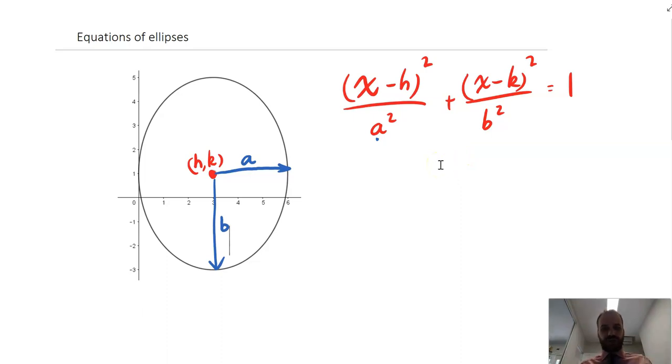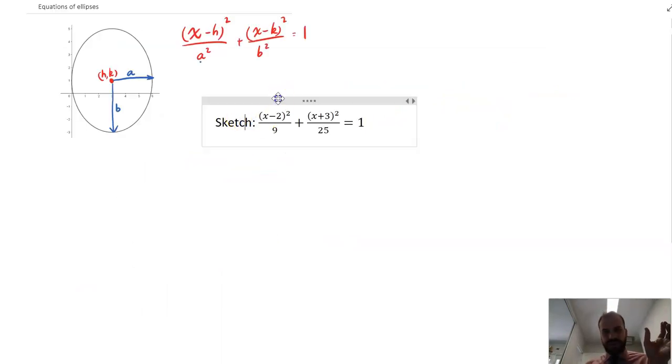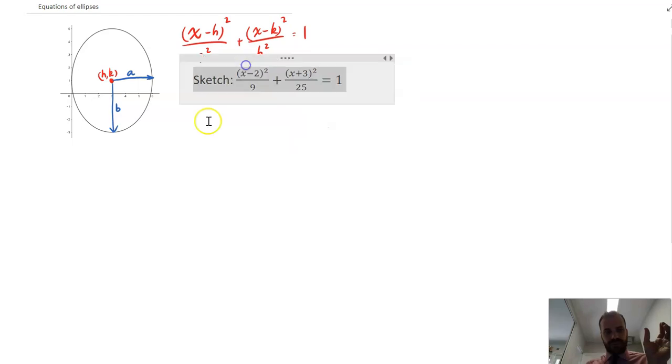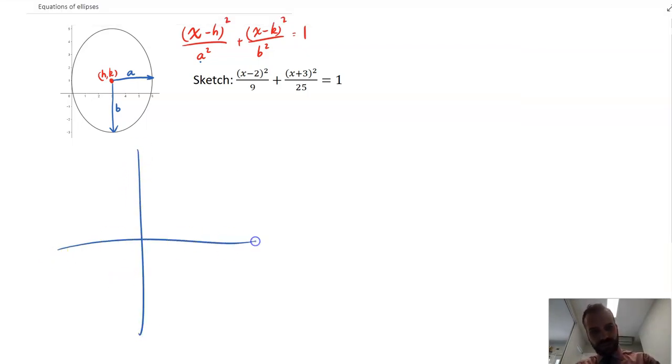So now we're just going to try a question where we say sketch an ellipse. So here's my example here, and this is the thing that we're going to sketch. I'll just move this question up here a little bit and we'll get to work. So what do we know about this ellipse? And I'm going to draw a really rough sketch of it and then we're going to neaten it up.